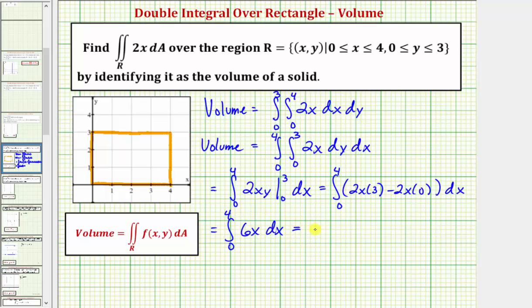Now we integrate with respect to x, so we'd have six times x squared divided by two, which simplifies nicely to three x squared, which would be equal to three times four squared minus three times zero squared, which is equal to three times sixteen, which equals forty-eight.